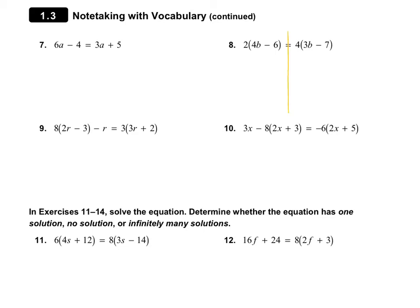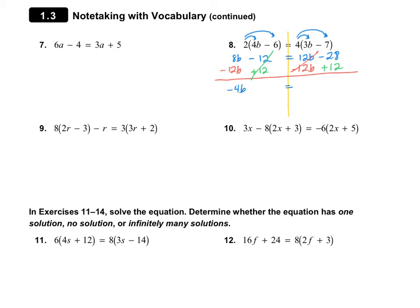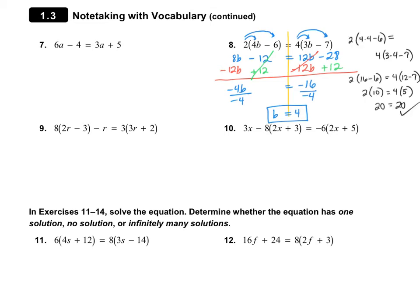Let's take a look at number 8. I'm going to draw my line. First I need to distribute: 2 times 4b is 8b, and 2 times negative 6 is negative 12. On the right, 4 times 3b is 12b, and 4 times negative 7 is negative 28. Now I'll move the variables by subtracting 12b on both sides, then add 12 to both sides. I have 8 and negative 12 giving negative 4b, and negative 28 plus 12 is negative 16. Dividing by negative 4, b is equal to positive 4.